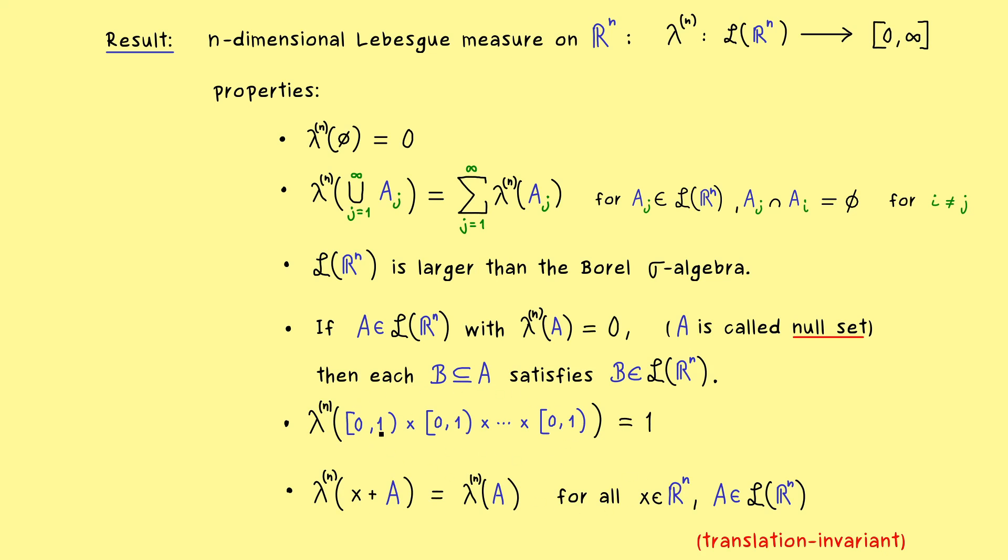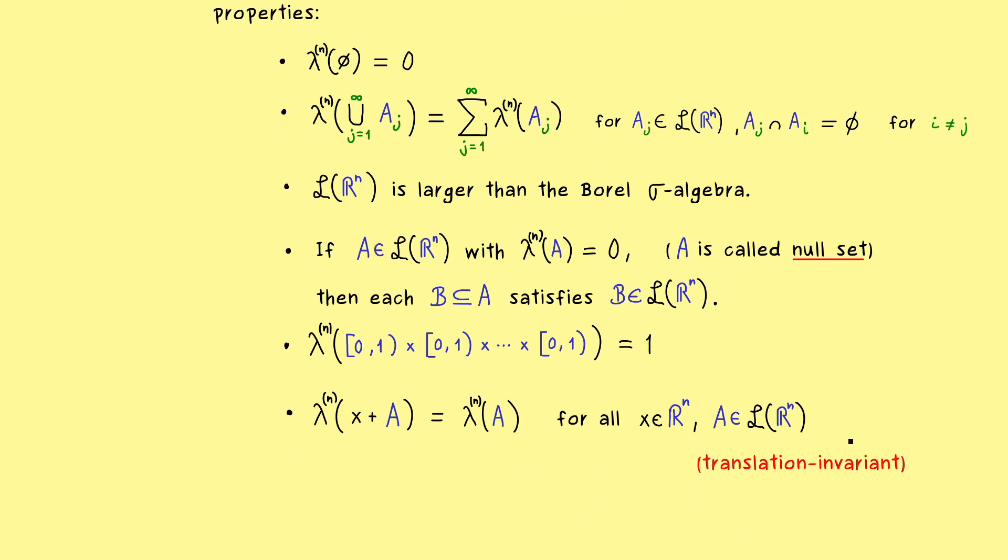And moreover, if we form the unit cube in Rn, so we have n times the Cartesian product here, then we get out one as well. And also in addition we are still translation invariant for the n-dimensional Lebesgue measure.